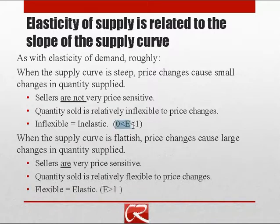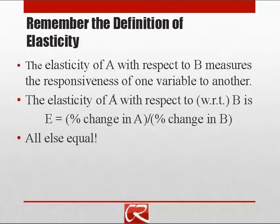An elasticity of something like one third, or 0.33, tells us that if prices go up by nine percent, quantity supplied only goes up by one third of that, or three percent. It's worth remembering the general definition: the elasticity of one variable with respect to another is the percentage change in the outcome variable over the percentage change in the input variable — and that carries over to the next couple of elasticities we'll look at.